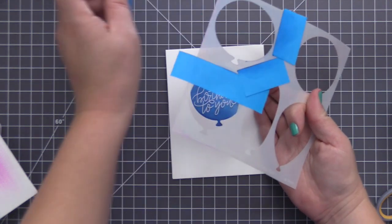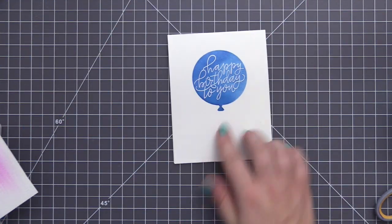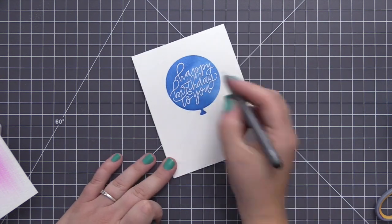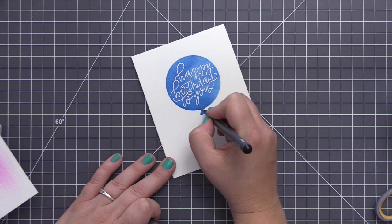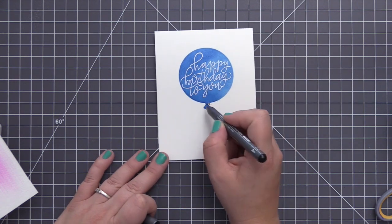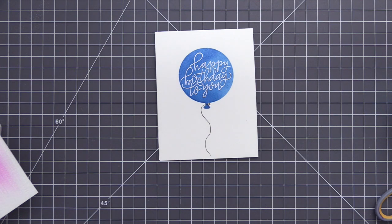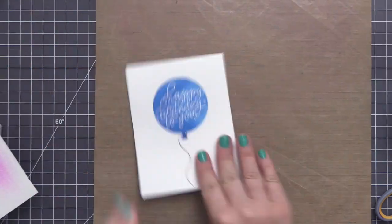We're going to go ahead and remove that stencil and this is my favorite part because we're left with this beautiful balloon. We have this really fun kind of texture look to it because we let some of the ink stay a little bit lighter. And then we have that gorgeous sentiment that's kind of peeking out from the balloon now since we did the emboss resist technique. This never gets old for me. I love seeing the image kind of come through the ink as you add it.